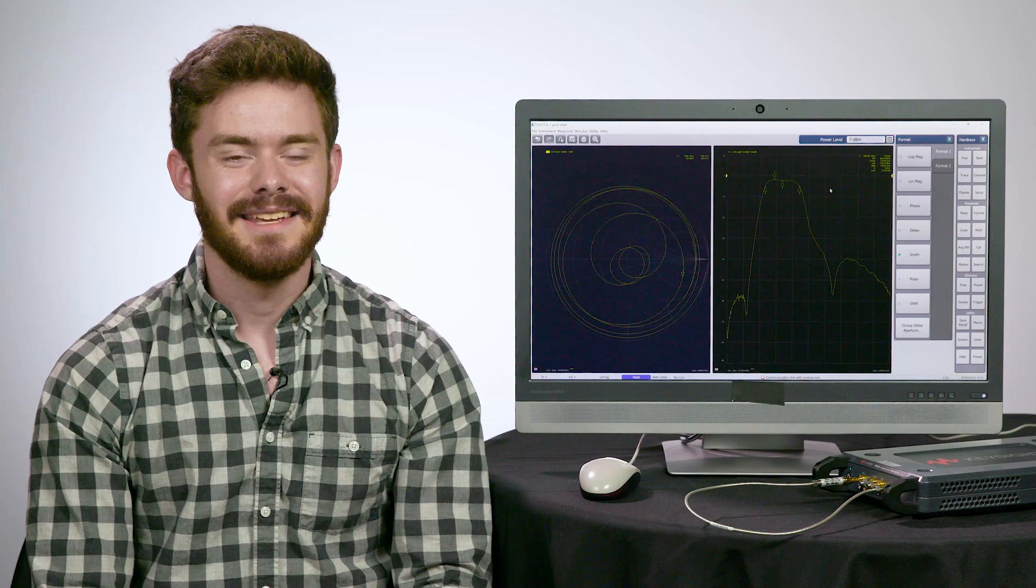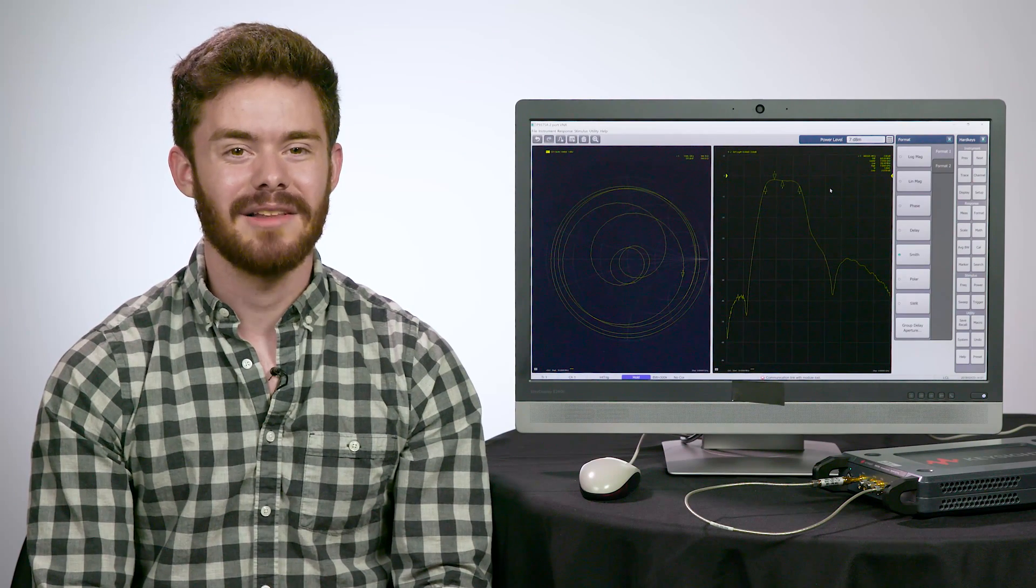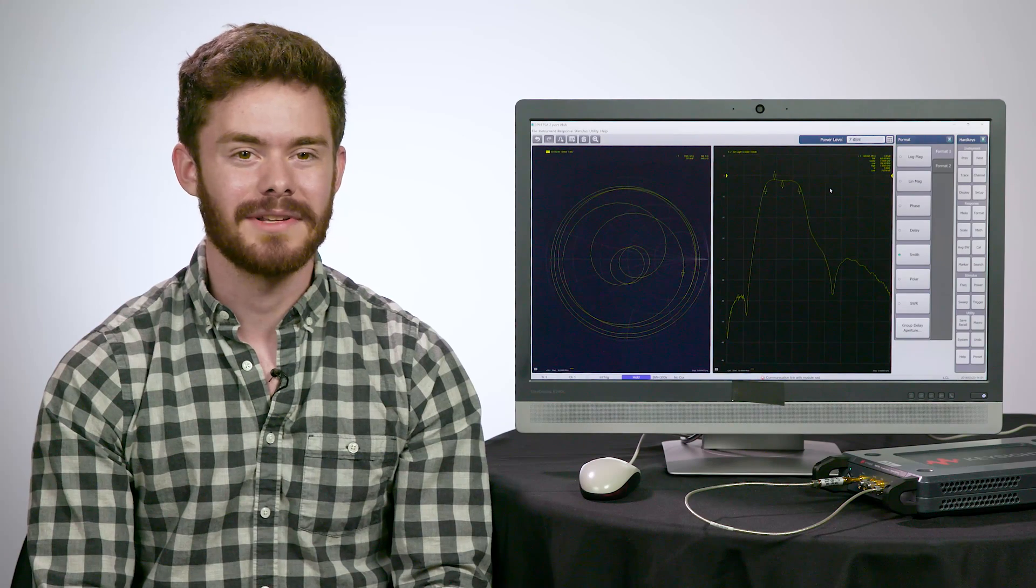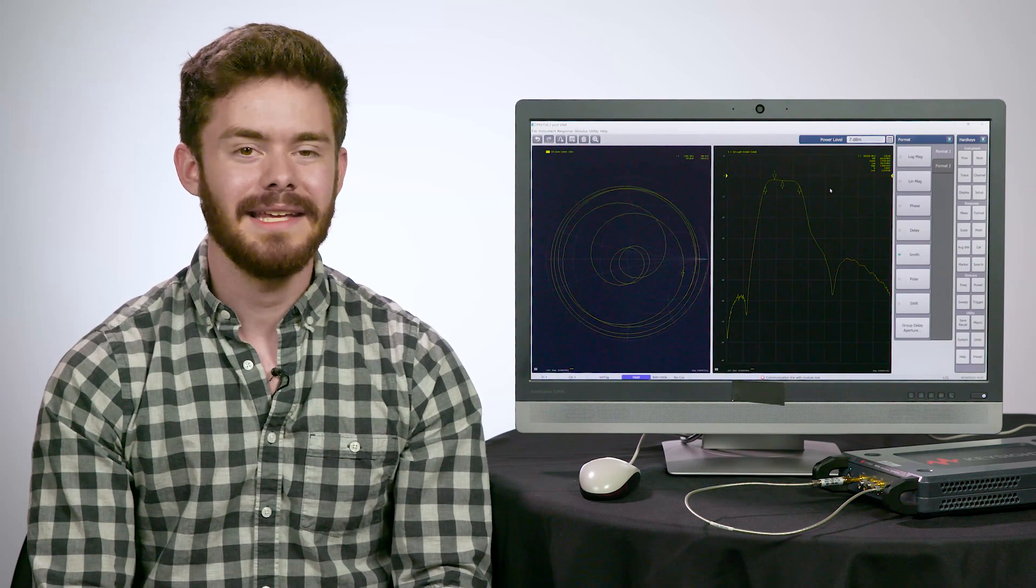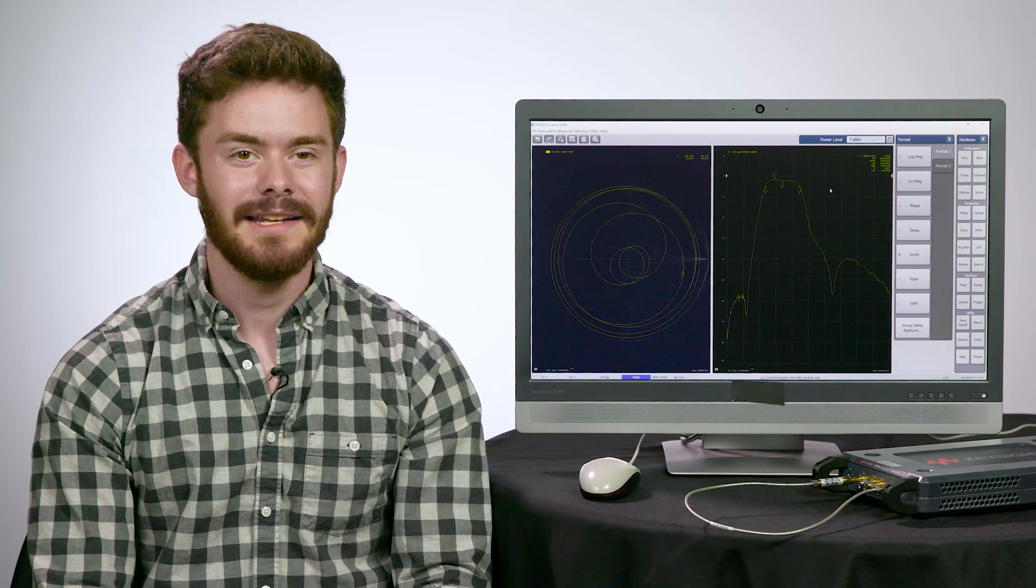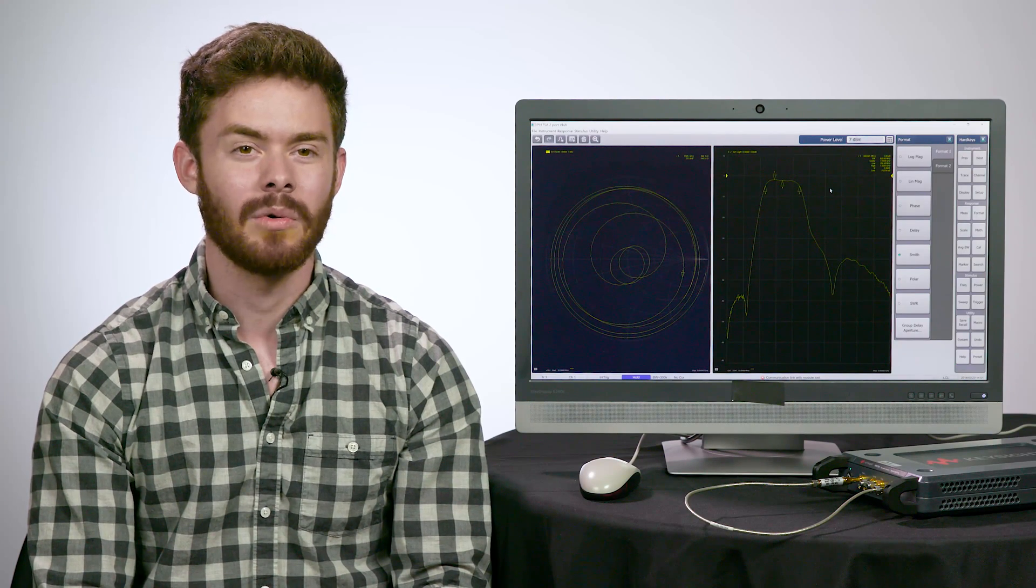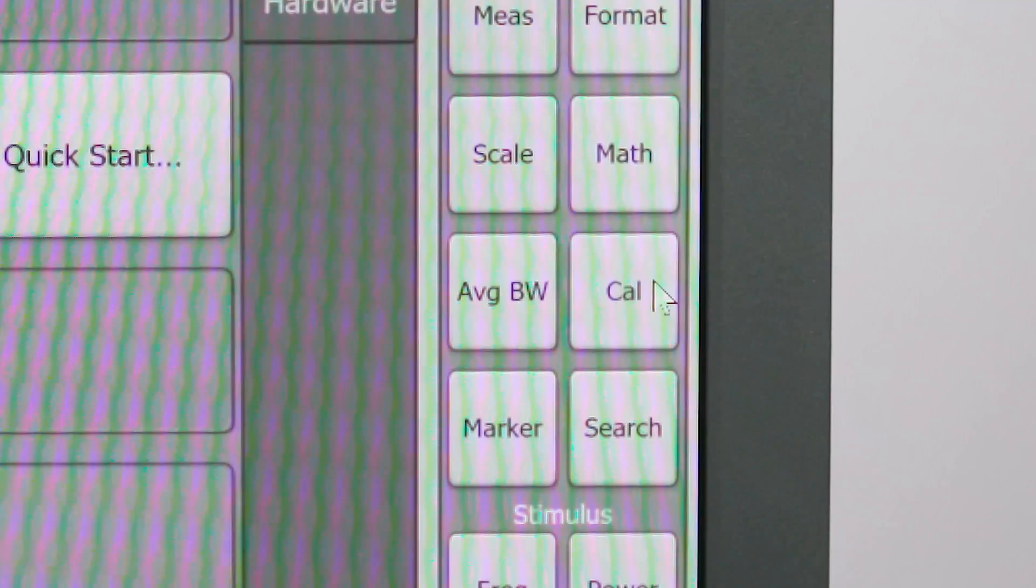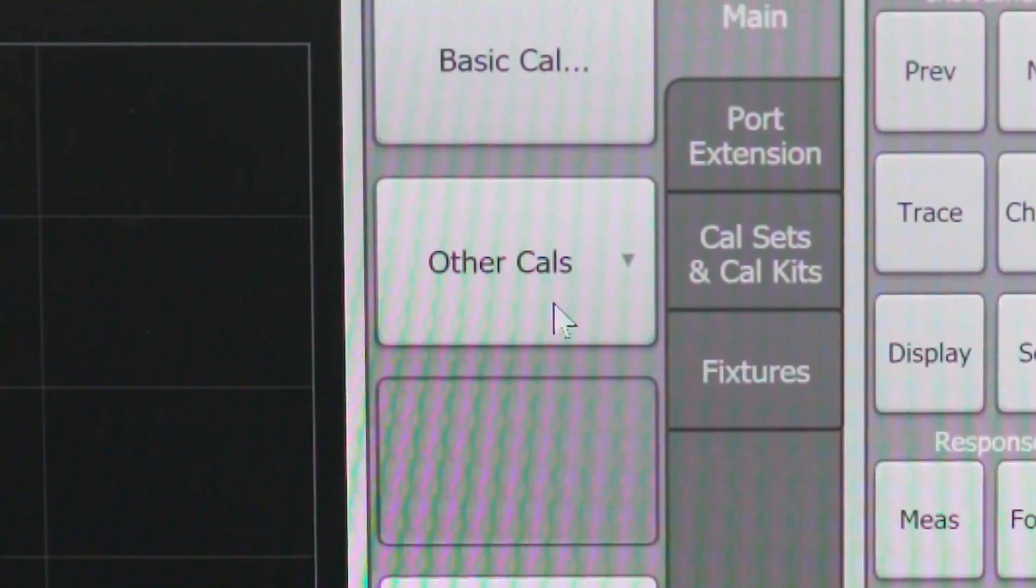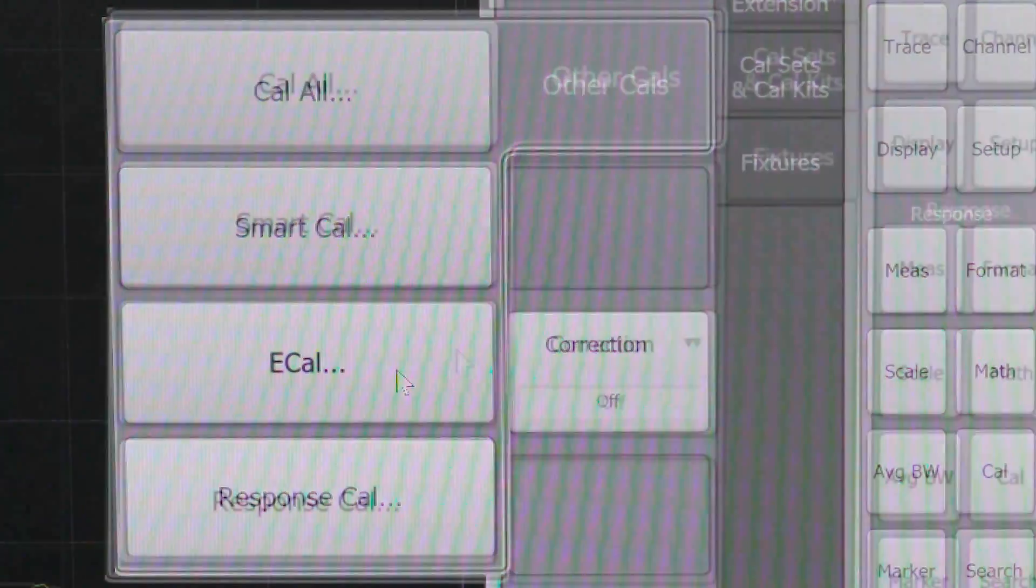Now that we're done with that quick setup, let's get calibrating! The ECOW module is used for this calibration to remove system errors, like the effective test cables. Wait until the LED of the ECOW module turns green, indicating that it has warmed up enough in order to correctly calibrate. Once the module is connected, start the calibration by going to the CAL menu, selecting Other CALs, and ECOW.